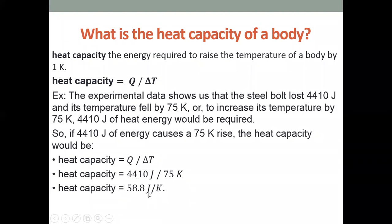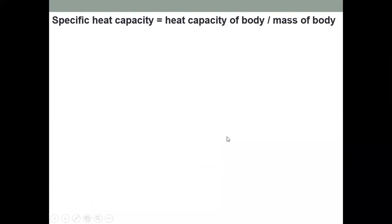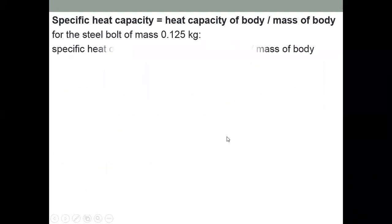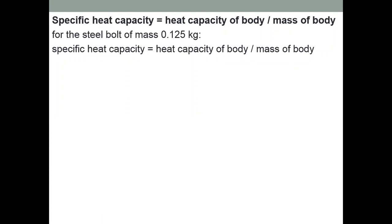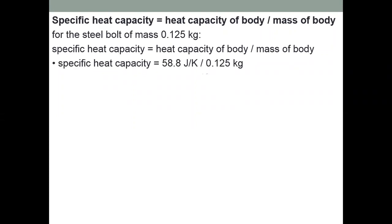We can also find specific heat capacity from heat capacity: specific heat capacity = heat capacity of body / mass of body. For the steel ball with a mass of 0.125 kg and heat capacity of 58.8 J/K: specific heat capacity = 58.8 / 0.125 = 470 J/kg·K.